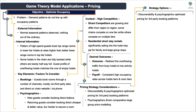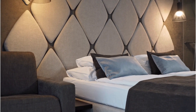Before we dive into these options, there is a key and somewhat extensive foundational implication that we have to deal with first that we absolutely cannot avoid. Considering discoverability and psychographics-driven pricing on the third-party platform assumes that we've got some level of control over what the booking platform spits out at the guest that eventually books a room in one of the hotels in our chain.